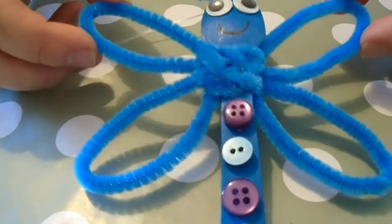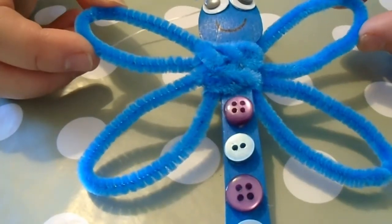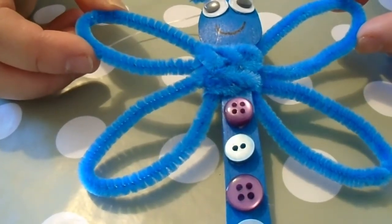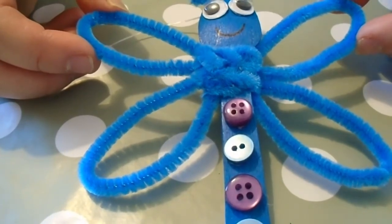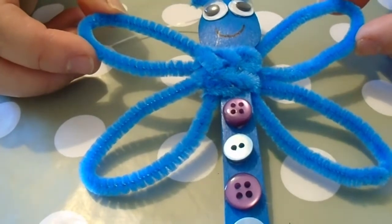Today we're going to make a damselfly hanging decoration. My name is Clare and this would be a craft that I would normally do at Shore House for the family activity day, but today we're bringing it to you at home.